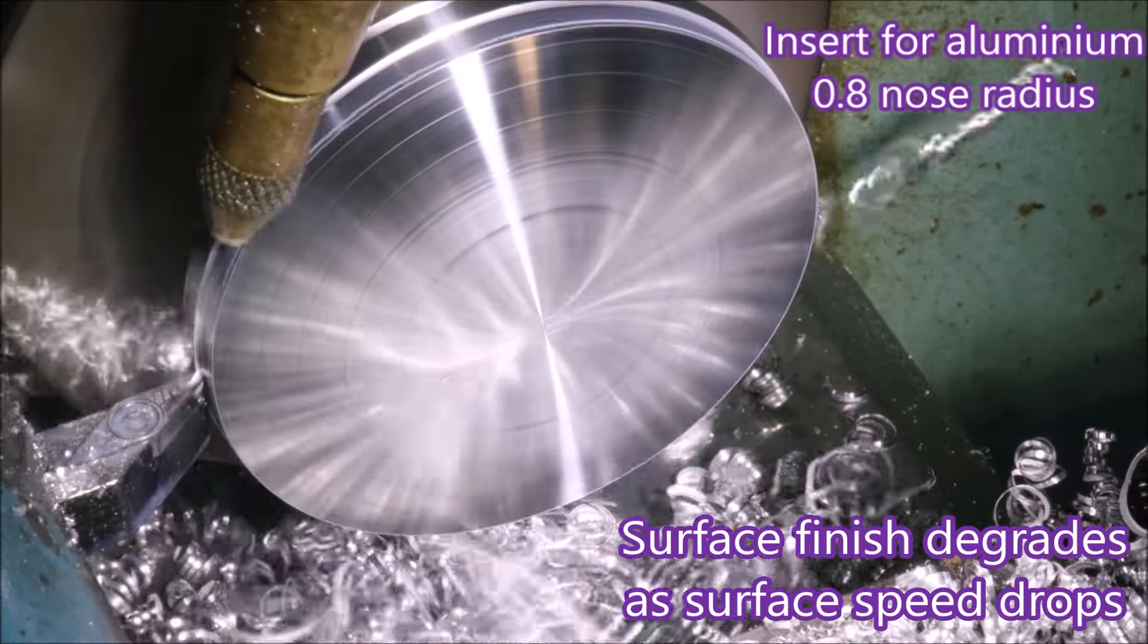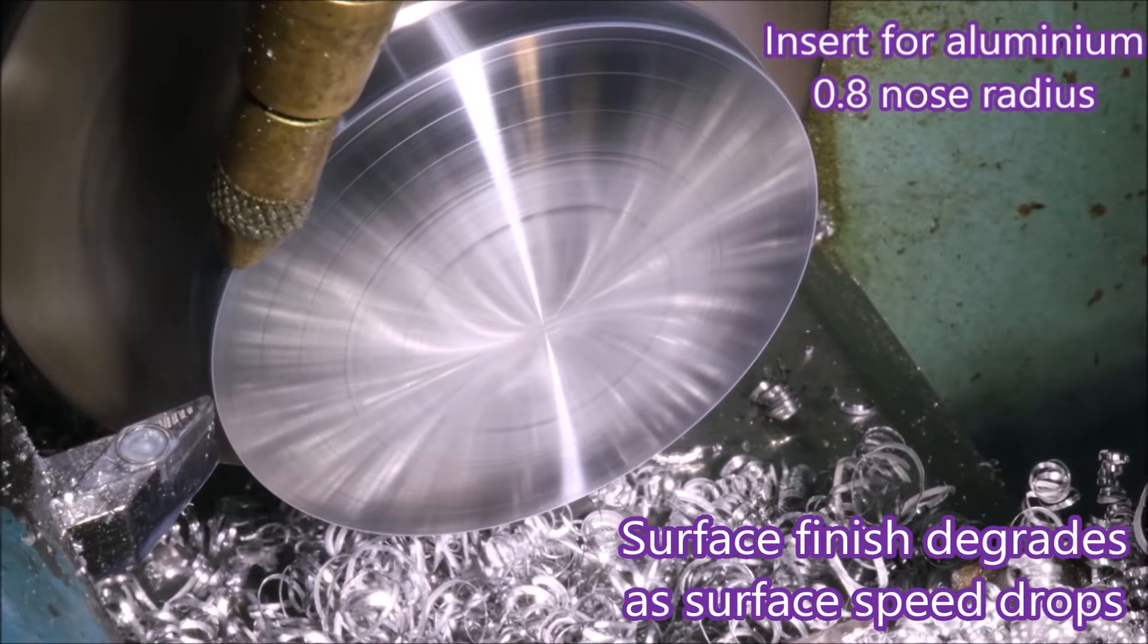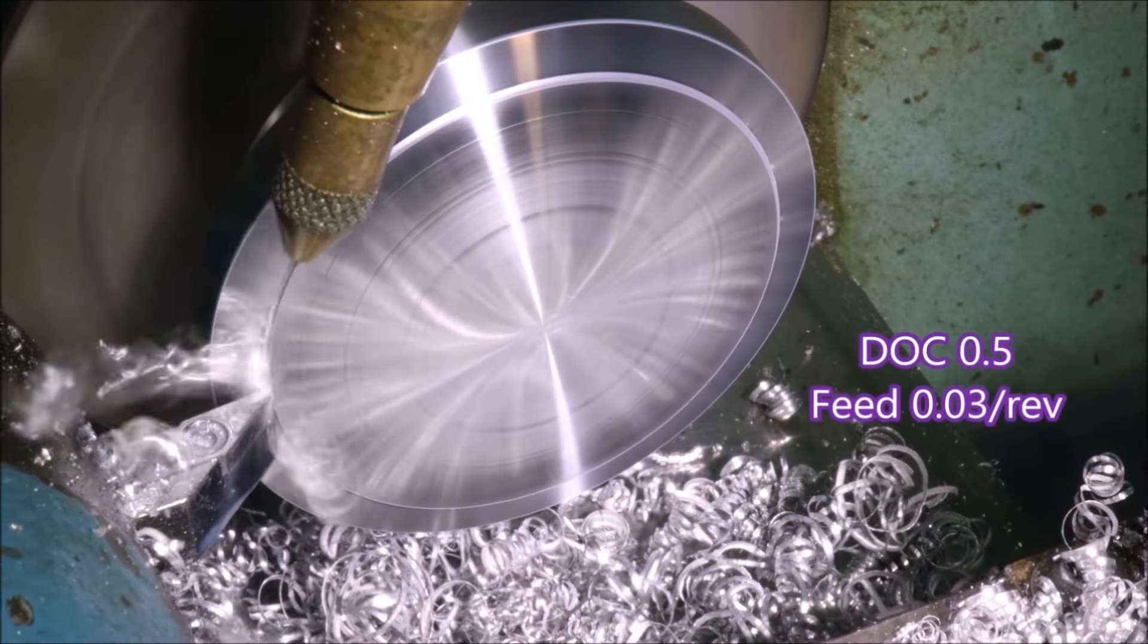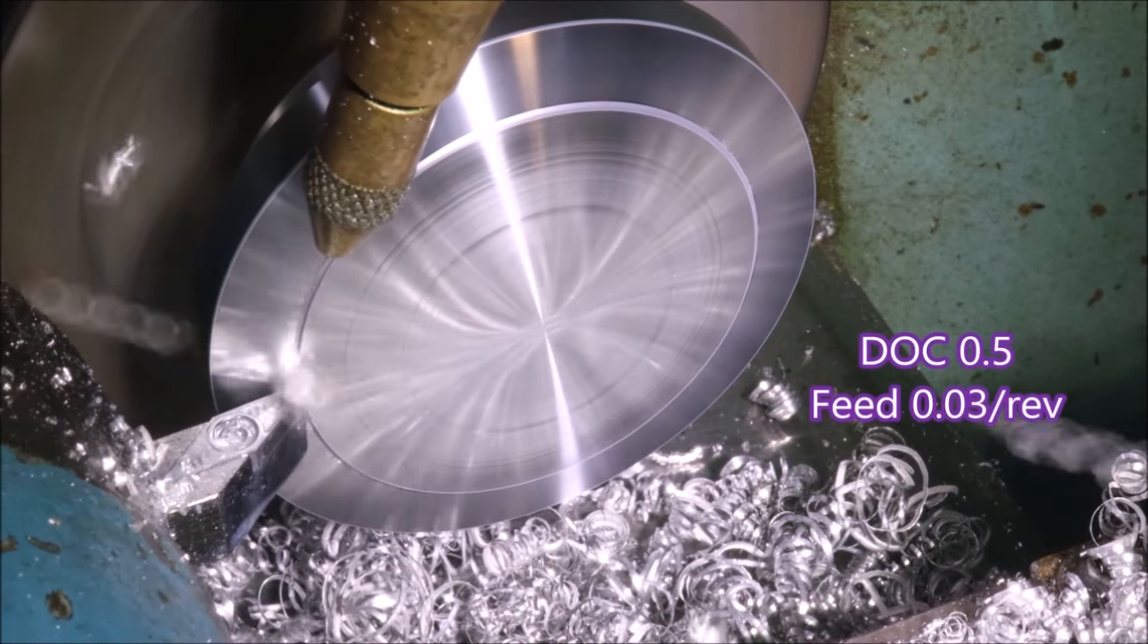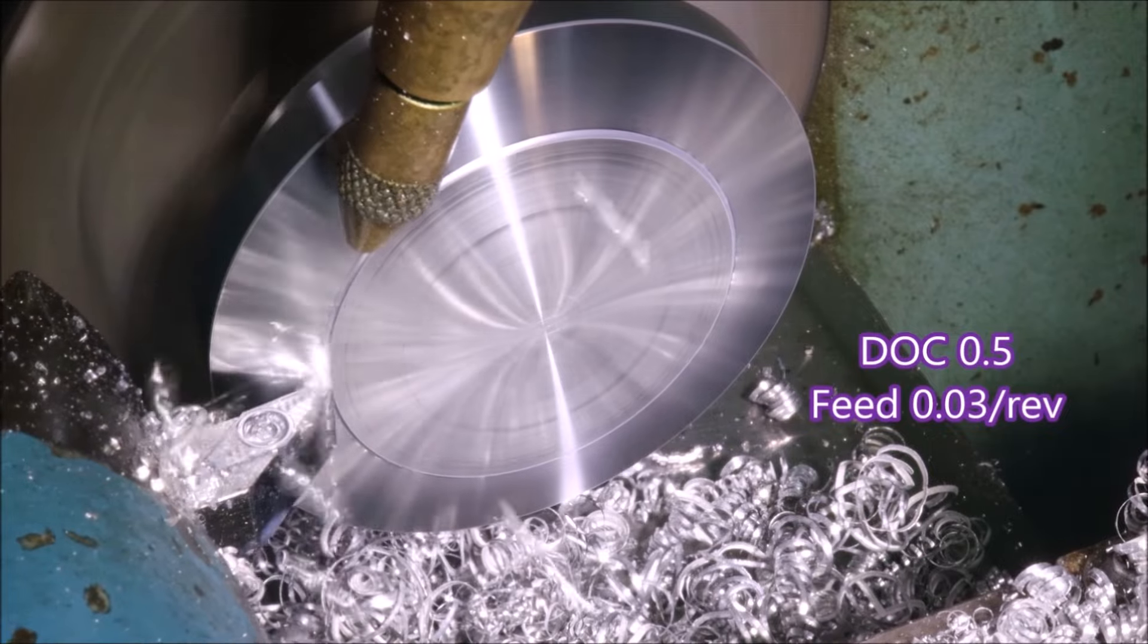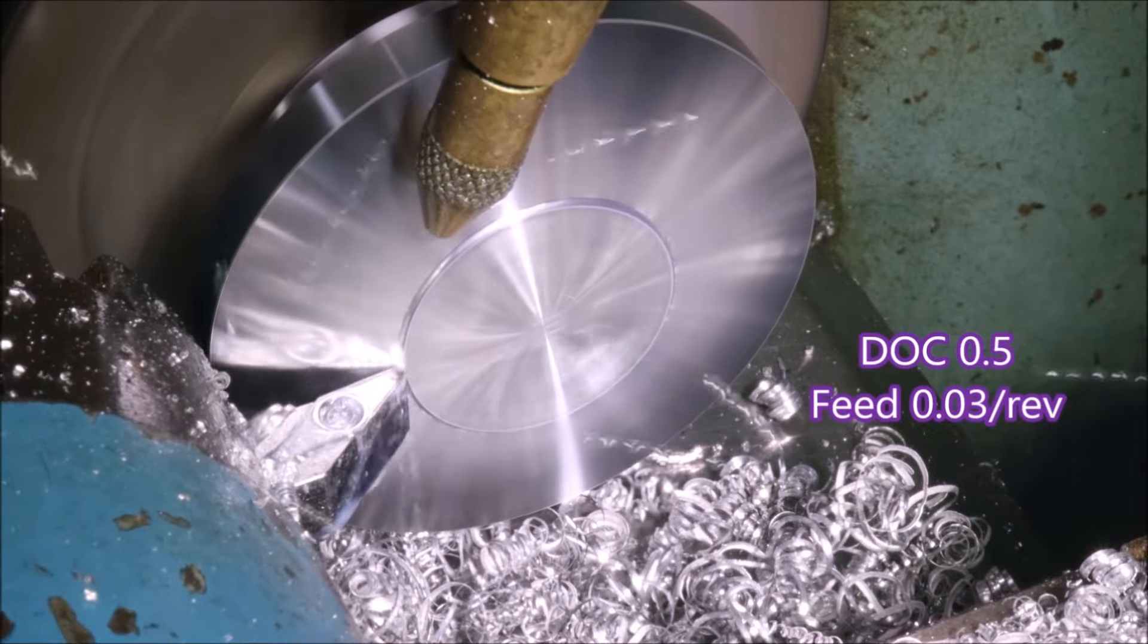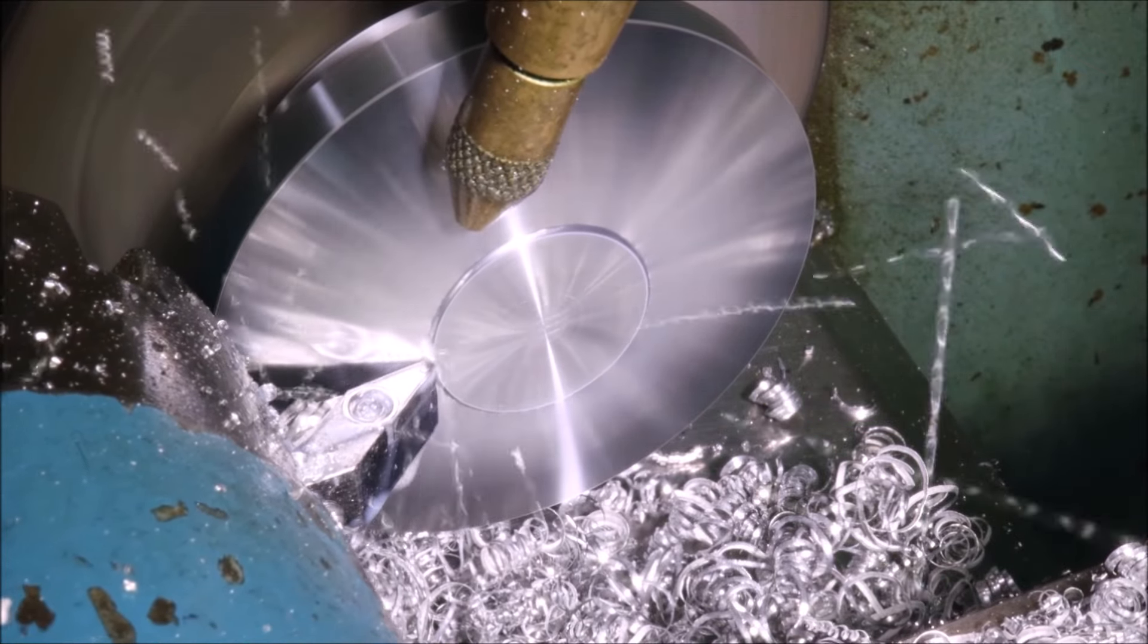It's interesting when you look at it how the surface finish diminishes as the surface speed drops off. This is doing 3000 RPM, which the way I would normally work it out would be should be about 1500 RPM based on the OD of 67mm.